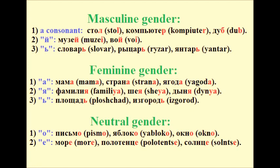The nouns that end in a consonant, in the letter Y, or in the sign of palatalization refer to masculine gender. For example: стол (table), компьютер (computer).